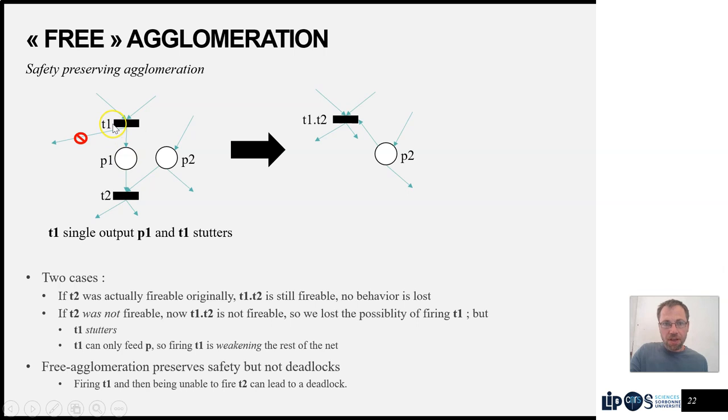But because t1 has no other outputs than p1, each time you fire t1 we're actually weakening the behaviors that the net can reach. Because we know that for ordinary Petri nets, the less tokens you put in there, the less behaviors you can reach. So the rest of the net is weakened by firing t1 and this is not interesting unless we can actually fire a continuation t2. So losing this behavior where we stuck some tokens in here and could not get them out is actually irrelevant with regards to safety.